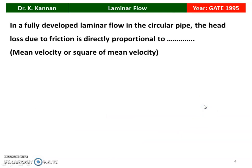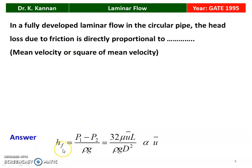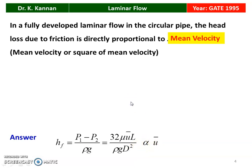Next question from the 1995 question paper: in fully developed laminar flow in a circular pipe, the head loss due to friction is directly proportional to which — mean velocity or square of mean velocity? The head loss H_F equals 32μ·ū·L divided by ρ·g·d². Taking everything else as constant, H_F is proportional to ū, the mean velocity.